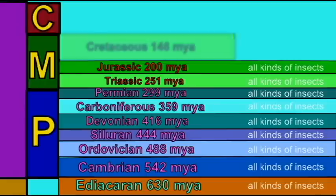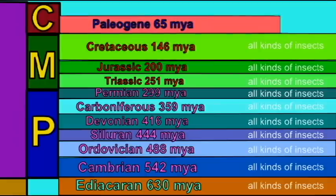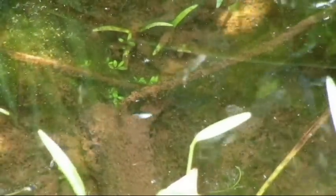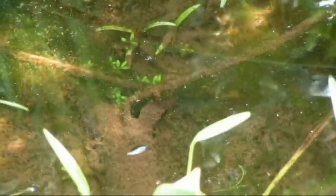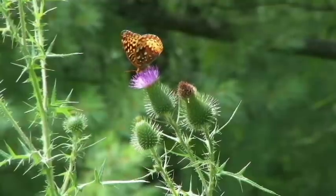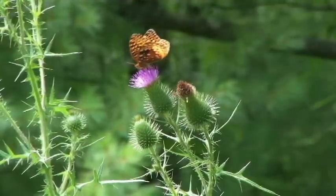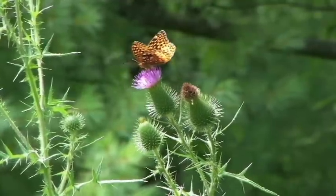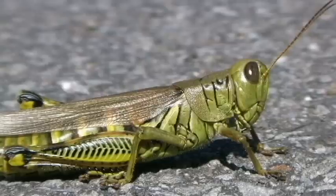It is not hard to find bees today, or ants, or beetles. And so if every modern kind of insect has existed through all of the ages of Earth, then the fossil record could easily reflect this.